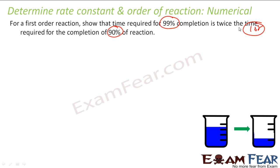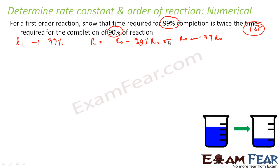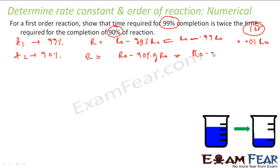Pretty easy — just find time for both cases. In case one, 99% of the reaction is complete, so the final concentration R is R₀ minus 99% of R₀, which is nothing but 0.01 R₀. In case two, when 90% of the reaction is complete, the final concentration R is R₀ minus 0.90 R₀, which is 0.1 R₀.